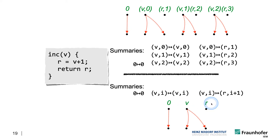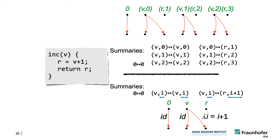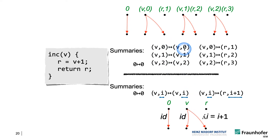So whereas in IFDS we would have this domain of pairs and separate summary functions, in IDE instead we would have a domain restricted to the context independent parts — in this case, to the variable names. We would have edges that you can read as taint edges, telling you how data is flowing from one variable to another. And then to annotate the context dependent information, we simply add function annotations to these summary edges. In this case it's very simple — the identity function, meaning the value does not change. This represents these mappings where V is always mapped to itself and the numeric value does not change.